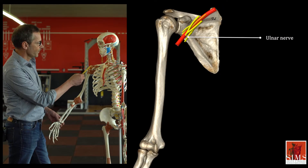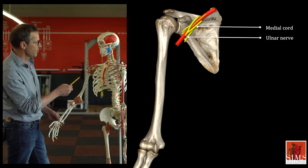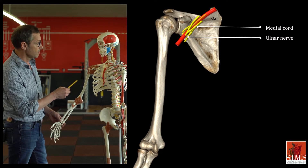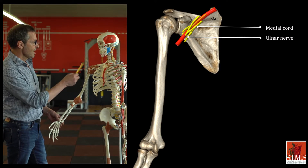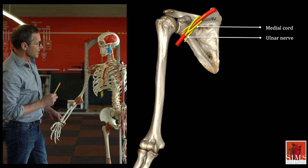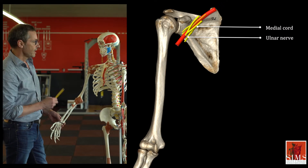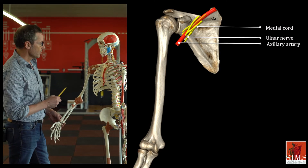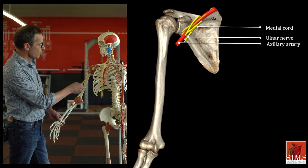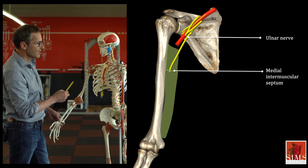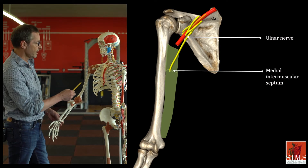The ulnar nerve arises from the medial cord of the brachial plexus. It runs towards the axilla and is the most medial of the three nerves that lie medial to the axillary artery. The ulnar nerve then descends along the bicipital groove to the anterior compartment.